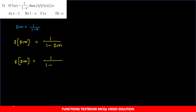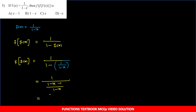F(F(x)) kya hoga? Left hand side mein x ki jagah F(x) put kiya, to right hand side mein bhi x ki jagah F(x) put karte hain: F(F(x)) = 1/(1 - F(x)) = 1/(1 - 1/(1-x)). Simplify karte hain: denominator mein 1 - 1/(1-x) = (1-x-1)/(1-x) = -x/(1-x). So F(F(x)) = (x-1)/x.